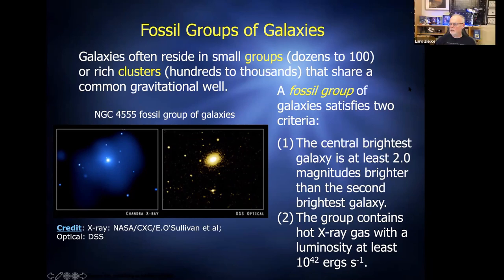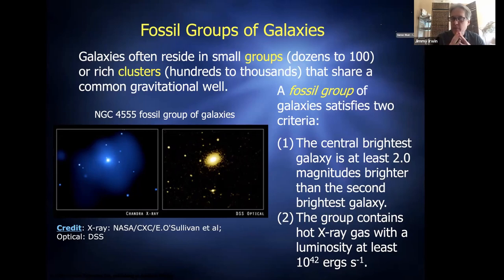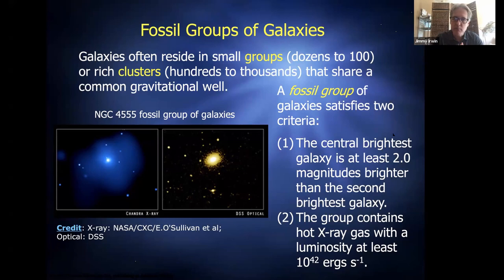On the question of whether one could reverse-engineer the image to reconstruct the original shape of the lensed object: probably not. There would be so many alternative mass distributions that could produce the same lensed image that you couldn't confidently backtrack. You have too many variables — what is the exact mass distribution, is it symmetric, is it slightly asymmetric — and I don't think anyone could reliably take those arcs and recreate the original galaxy with our limited knowledge of all the variables that go into making that lens.